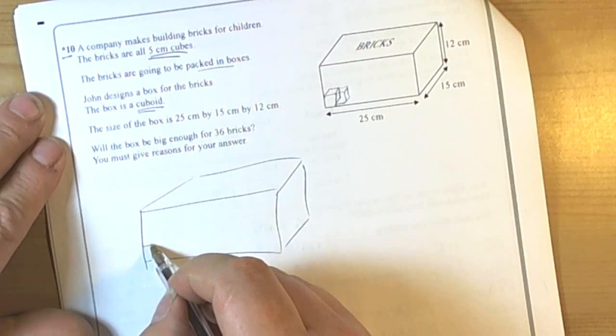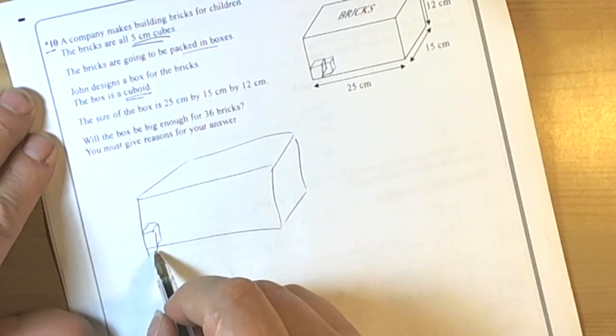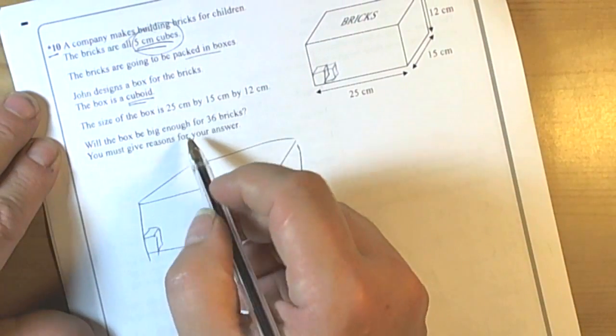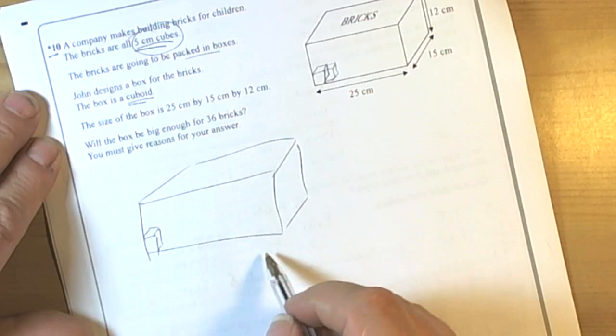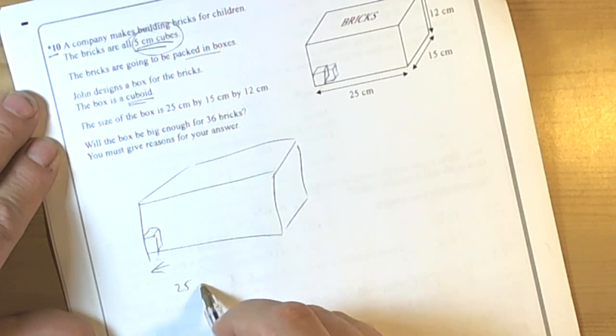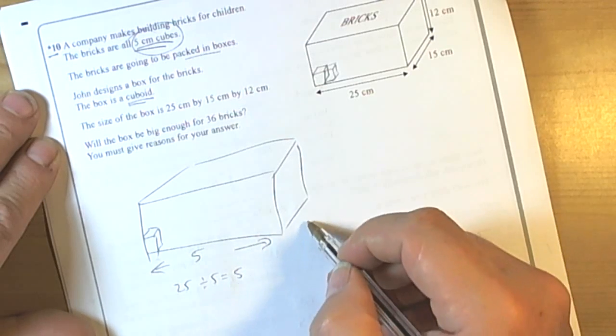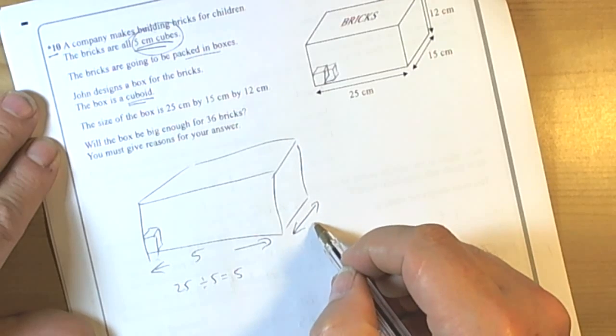We're fitting these bricks along the bottom, trying to build up a layer. The bricks are 5cm long. So along here, if we do 25 divided by 5, we can fit 5 bricks along that length.